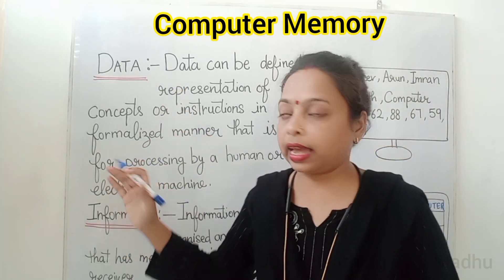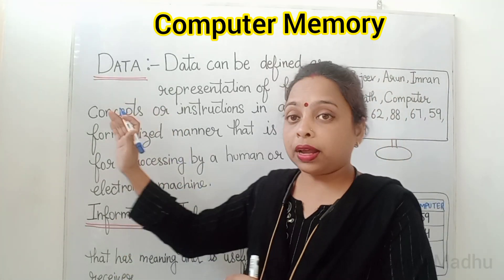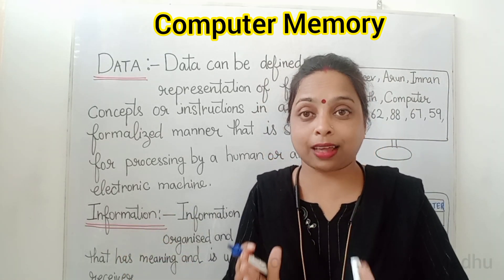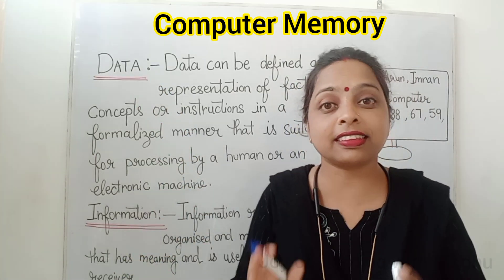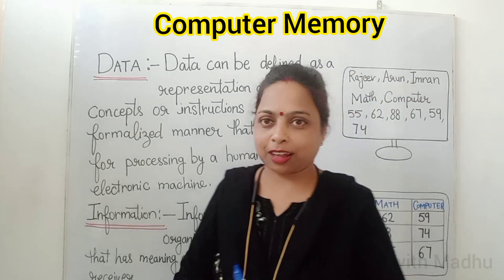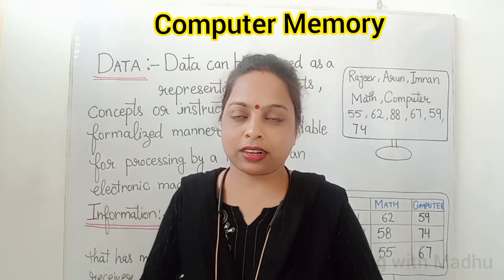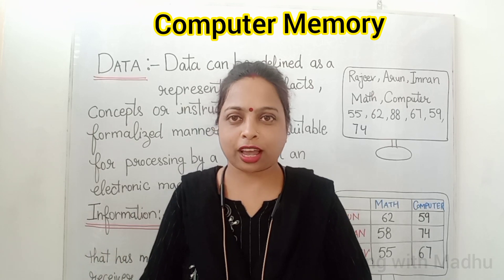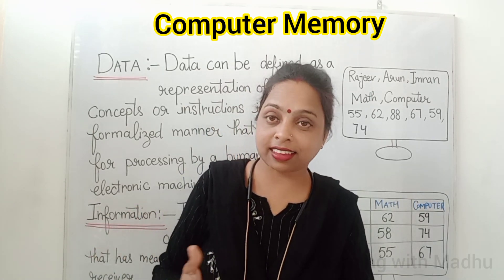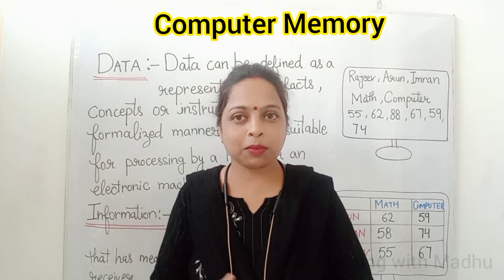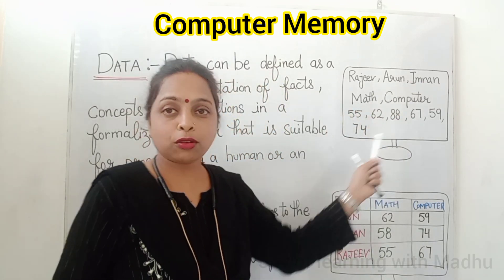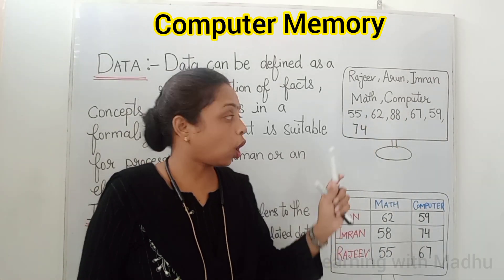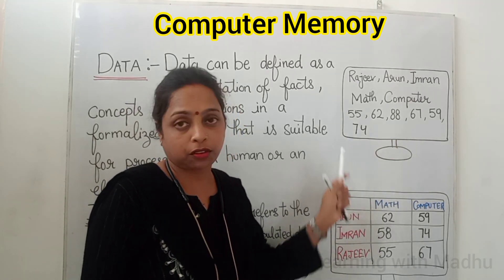What is data and what is information? I will give you one example. Suppose we have some students' names: Rajiv, Arun, Imran. Some subjects: Math, Computer. And some numbers: 55, 62, 88, 67, 59, 70. So here we have names, subjects, and numbers. This raw material is called data.